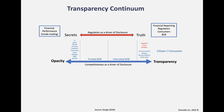In the trusted B2B box, companies share some information with trading partners doing co-development. In untrusted B2B, you share limited information. On the right-hand side you have companies doing what's called radical transparency — sharing all suppliers, costs, and margins. We also know that companies want to be clear about their environmental footprint, whether they're involved in or have checked for slavery in their supply chain, and issues around animal welfare and child labor.